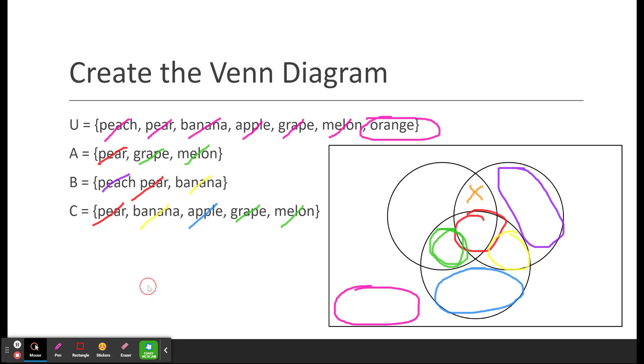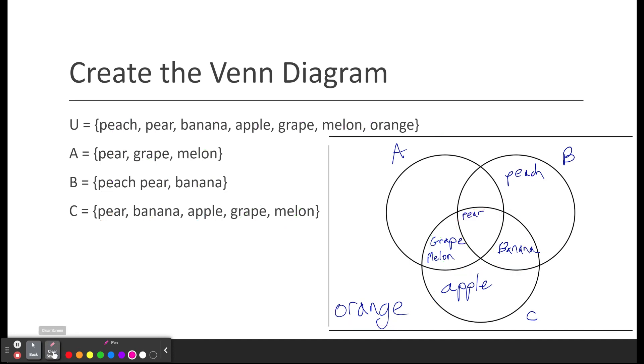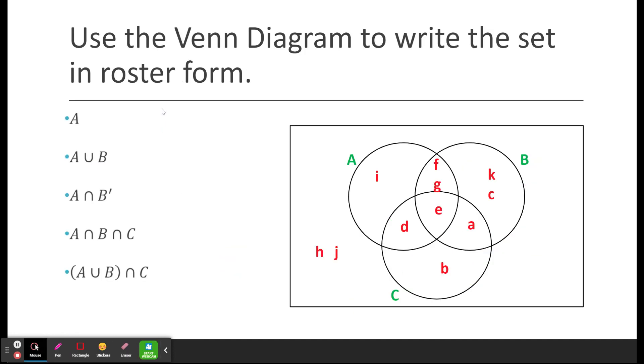Let's see how we did. Boom. Peach, pear, banana, grape, melon, apple, orange. Cool. Love it when a plan comes together. So that's how you do those types.